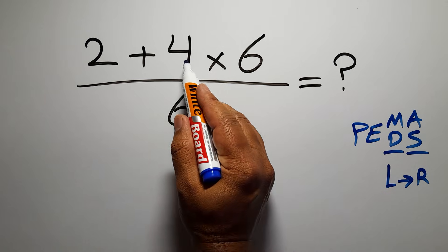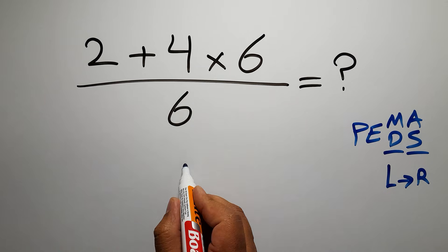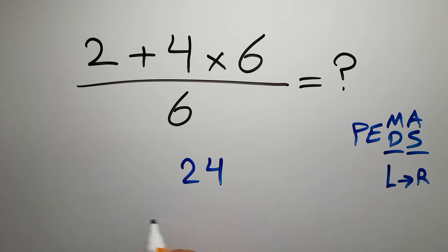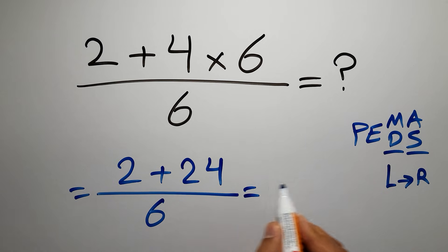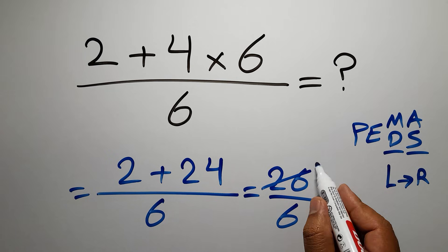4 times 6 gives us 24, so we have 2 plus 24 over 6. Okay, now 2 plus 24 gives us 26, so 26 over 6. Okay, now 26 divided by 2 gives us 13, and 6 divided by 2 gives us 3.